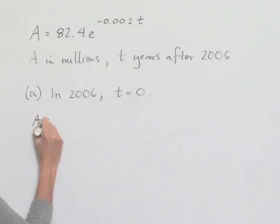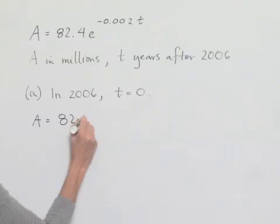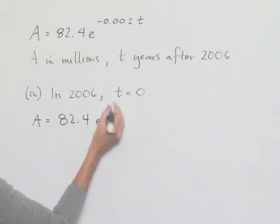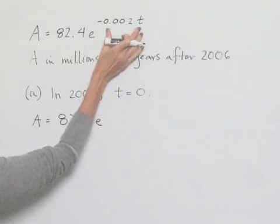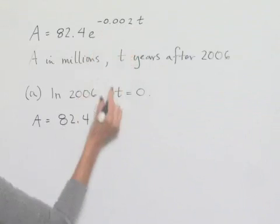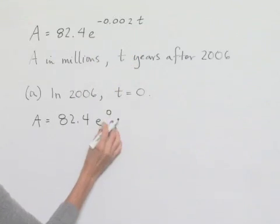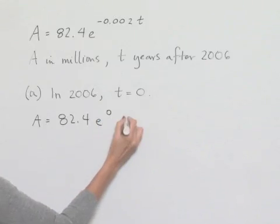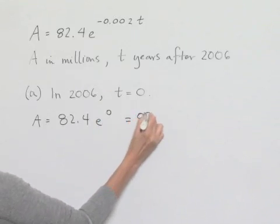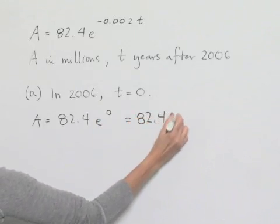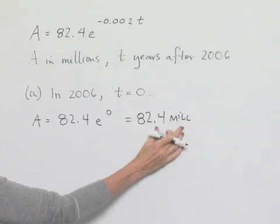Therefore, A is going to equal 82.4 times e to the power where we're going to multiply 0 times this expression, which gives us a 0. E to the 0 power equals 1, and therefore, 82.4 million is going to end up being the population in the year 2006.